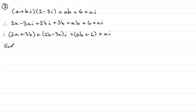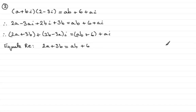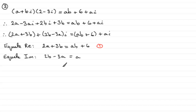Equating the real parts gives 2a plus 3b equals ab plus 6 — call that equation 1. Equating the imaginary parts gives 2b minus 3a equals a. Adding 3a to both sides gives 2b equals 4a, so b equals 2a — call that equation 2.